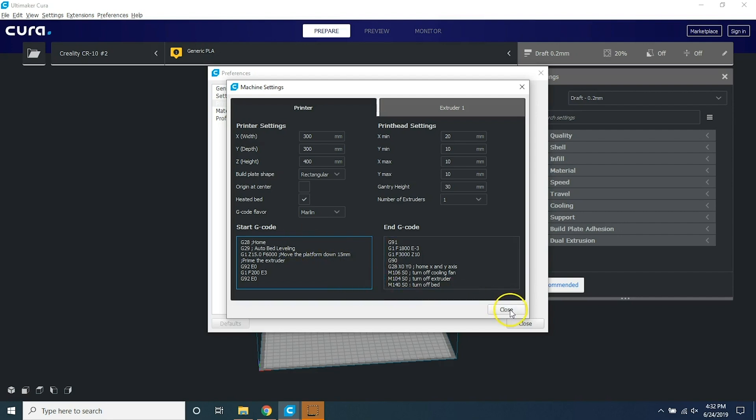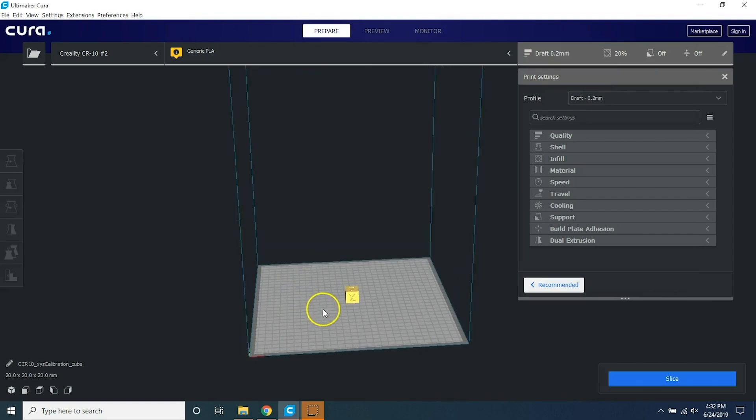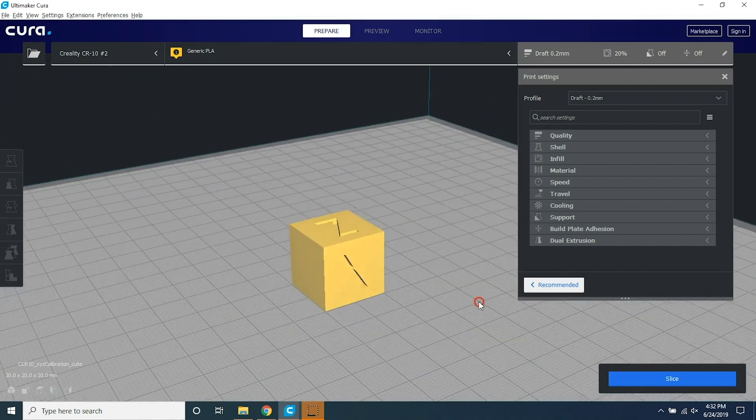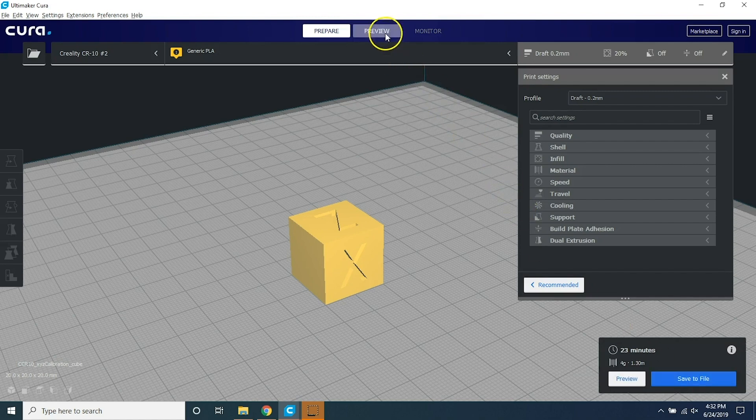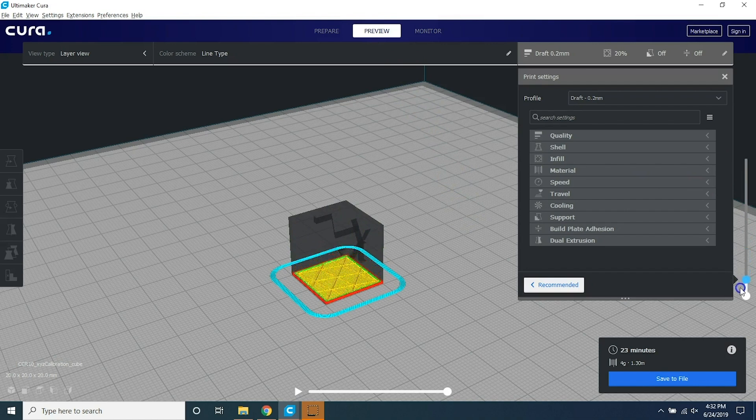Once you close the menus, you can drag and drop the model of your choice into the build area. You can click and drag around to get a better view of the model. Click the Slice button and the computer will calculate all the movements needed for the printer. You can see this in the Preview tab. Then click Save to File and it will save it to your SD card.